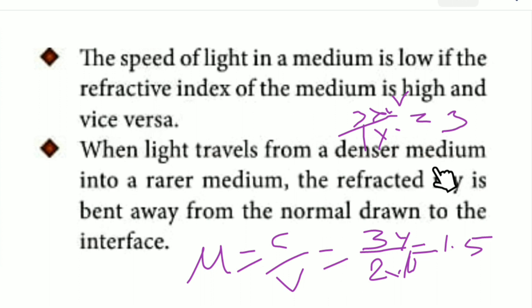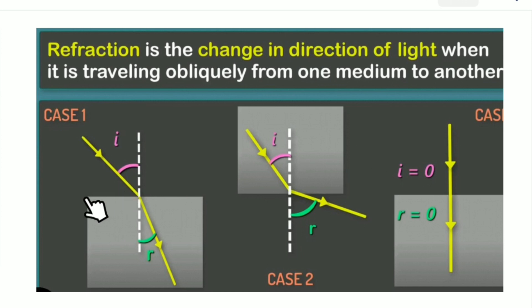When light travels from a denser medium into a rarer medium, the refracted ray is bent away from the normal drawn to the interface. Interface is where the two mediums touch. When light goes from denser to rarer medium, like from glass to air, the incident ray bends away from the normal. Then, the angle of refraction R is greater than the angle of incidence I.